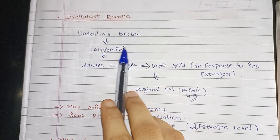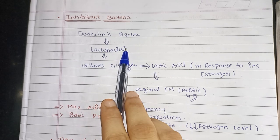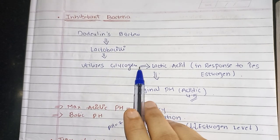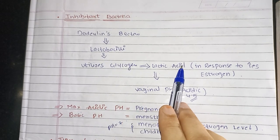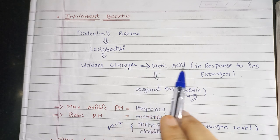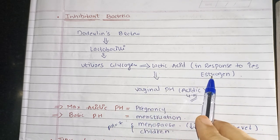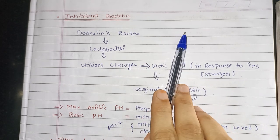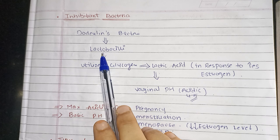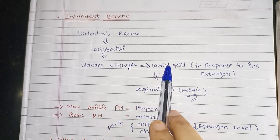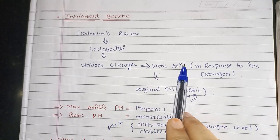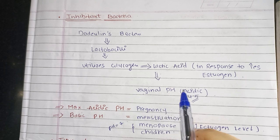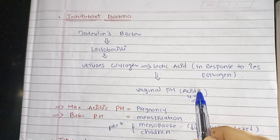What does it do? The lactobacilli utilizes glycogen and converts it into lactic acid under the influence of estrogen hormone. So when there is a high estrogen level, lactobacilli converts glycogen into lactic acid, maintaining the acidic vaginal pH.